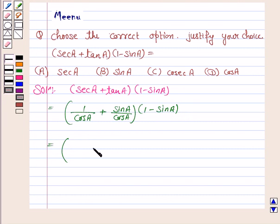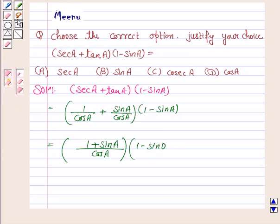Now taking LCM, so we have 1 plus sin A in the numerator into 1 minus sin A.